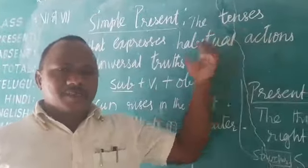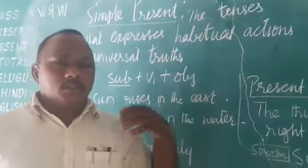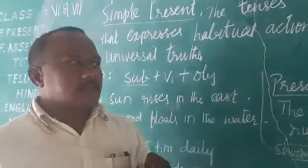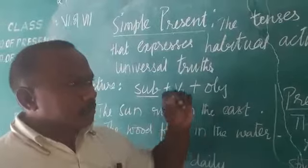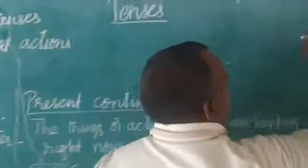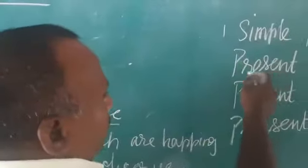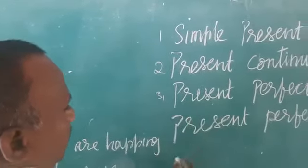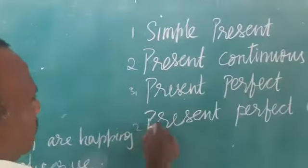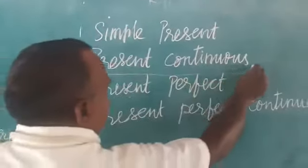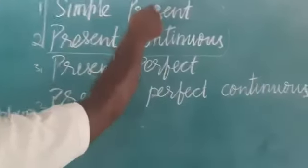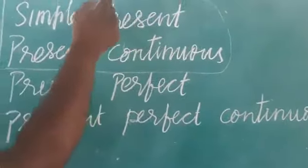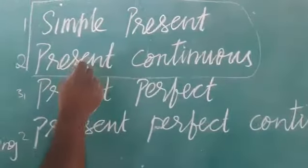These three tenses are again subdivided into twelve tenses. The first one is simple present, then present continuous, third is present perfect, and present perfect continuous. But today we are going to discuss only about these two: simple present and present continuous. What is simple present and how we write a simple present sentence, and what is the structure of it.